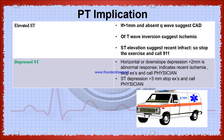T wave inversion suggests ischemia — this is a dangerous finding for the patient. If there is T wave inversion, we need to stop the exercise and refer them to the physician. If there is a depressed ST segment, the implications are: if it is greater than 2 mm for males, or greater than 1.5 mm for females, we need to know the implication for that patient.